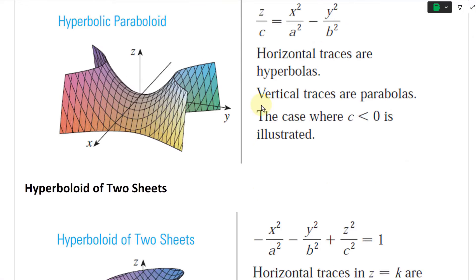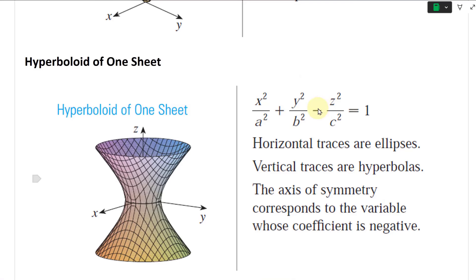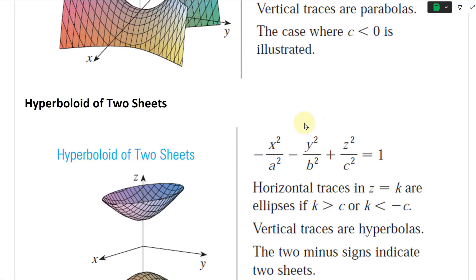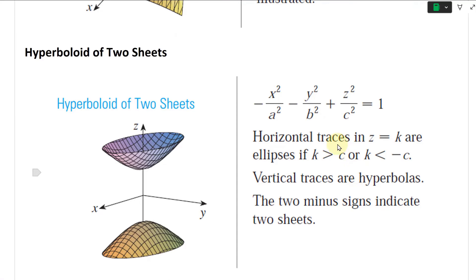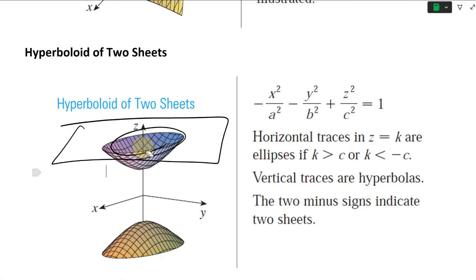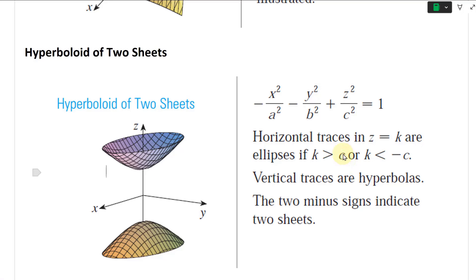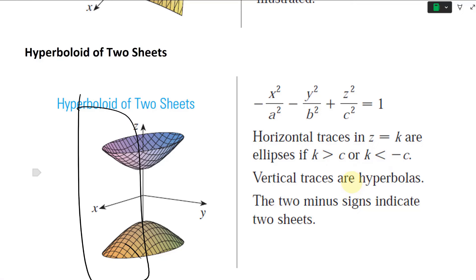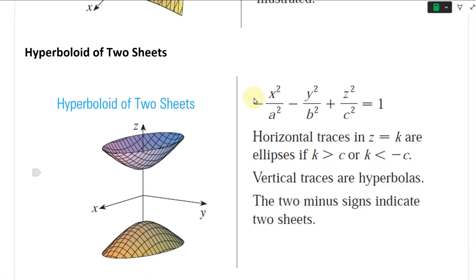There's also the hyperboloid of two sheets. Going back to the hyperboloid of one sheet — it has one negative sign and two positive signs. For two sheets, it's the other way around: two negative signs and one positive. So it's negative x squared minus y squared plus z squared equals one. Horizontal traces at z equals k are ellipses if k is greater than c or k is less than negative c. Vertical traces are hyperbolas. The two minus signs indicate the two sheets.